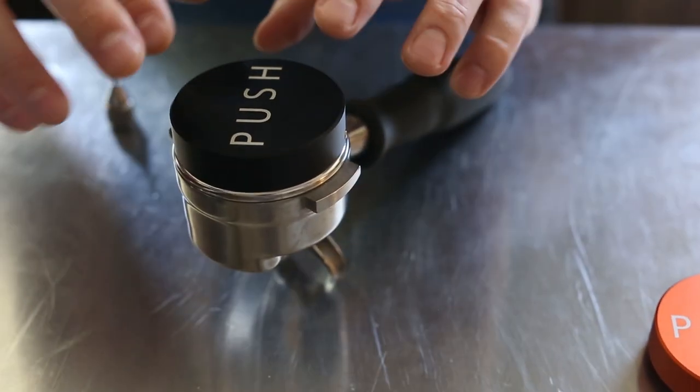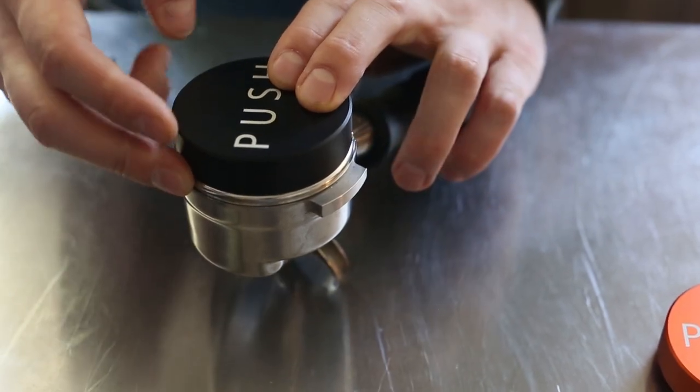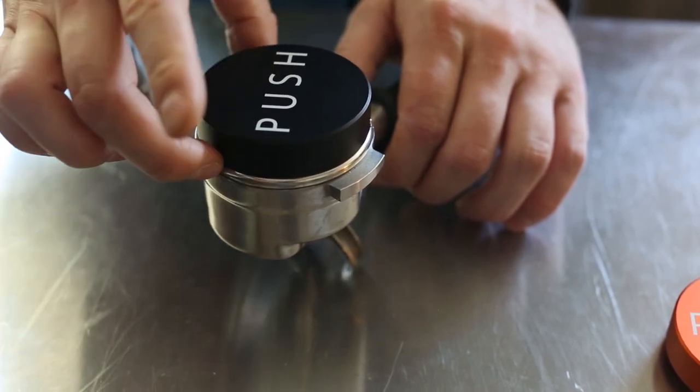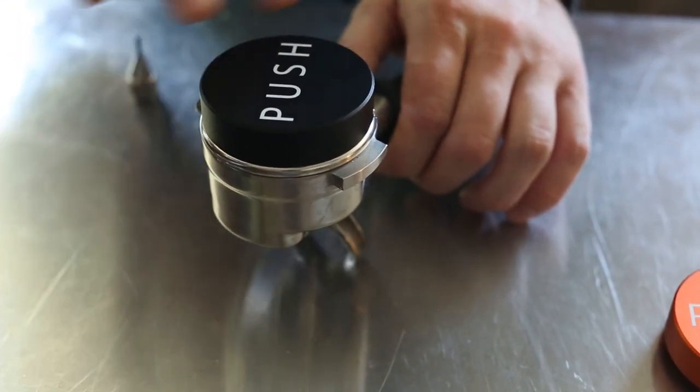At this point, my handle is touching the rim of the basket, which means my subsequent tamps will be even and level with the basket rim from here on out.